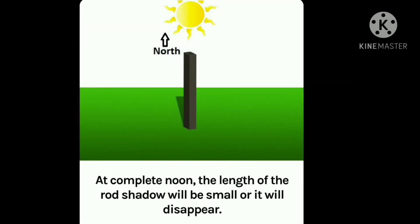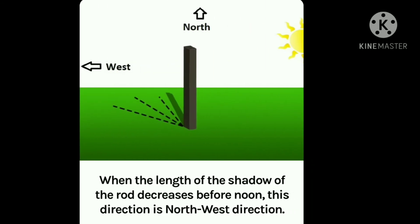At complete noon, the length of the rod shadow will be small and it will be disappeared. We can compare this time with 12 pm. When the length of the shadow of the rod decreases before noon, this direction is north-west direction.